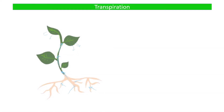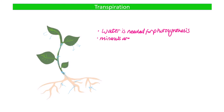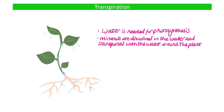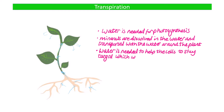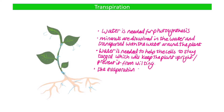Transpiration is important because water is needed for photosynthesis. The minerals dissolved in water can also be transported around the plant with the water. Water is needed to help the cells stay turgid, which is important to keep the plant upright and prevent it from wilting, and the evaporation of water from the leaves helps to cool the plant down.